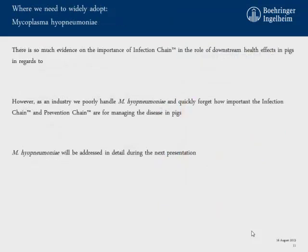Other diseases where we need to widely adopt this concept: mycoplasma is one of those. The University of Minnesota worked a lot with this idea from 2002 to 2007. There is a lot of information but it's not complete — we still need to work on the mycoplasma infection chain. There is so much evidence on the importance of the infection chain and its role in downstream health effects regarding mycoplasma. However, as an industry, we poorly handle mycoplasma pneumonia and quickly forget how important the infection chain and prevention chain are.